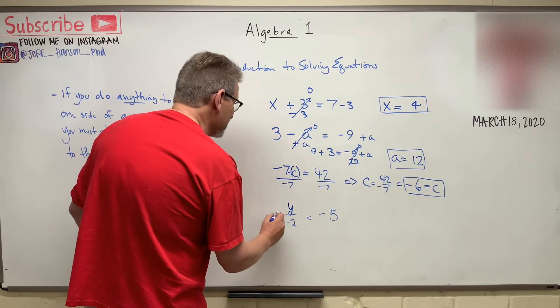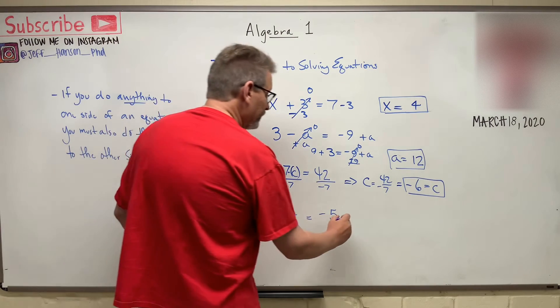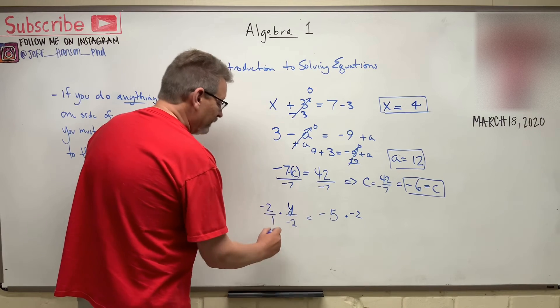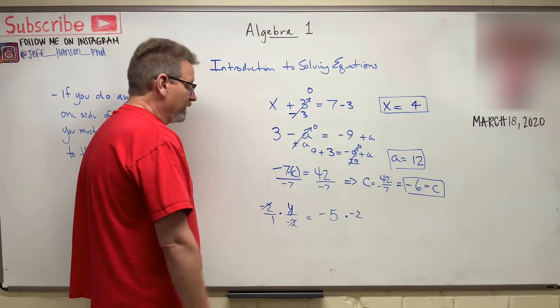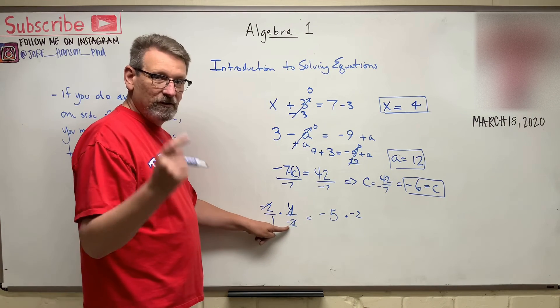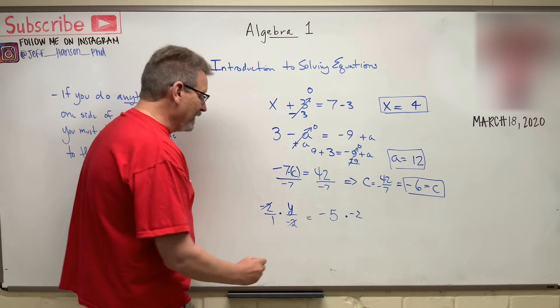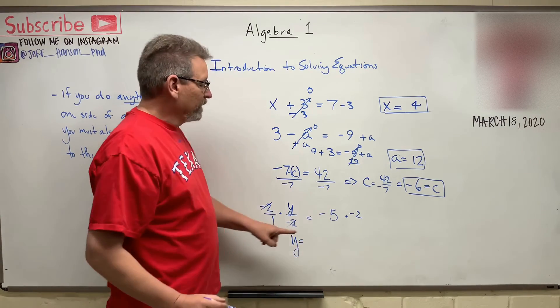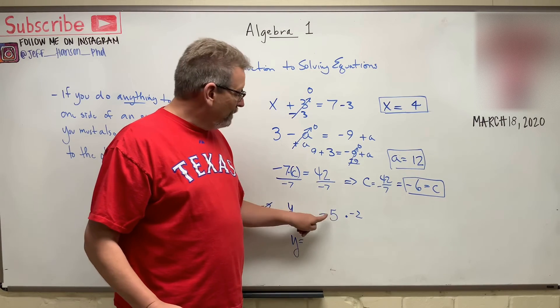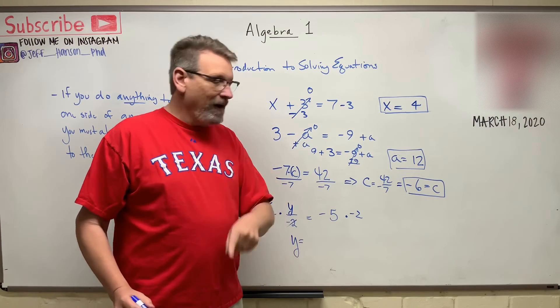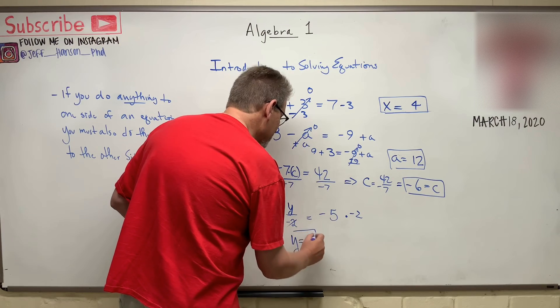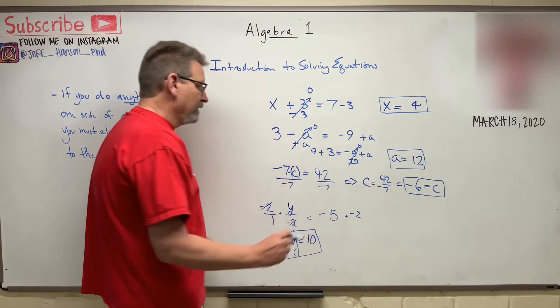Because if I multiply this side by minus two, and I multiply this side by minus two, the minus two, which is really a minus two over one, whoop whoop, those cancel out, don't they? They divide away. Minus two over minus two is how much? One. So I'm left with Y is equal to minus two times minus five times minus two. A minus times a minus gives me a positive. So positive five times two, it's ten. And there you go.